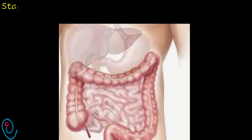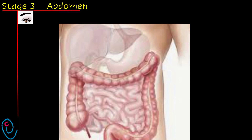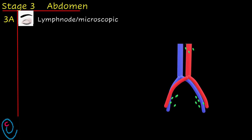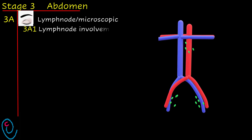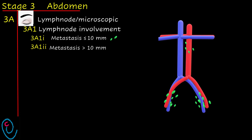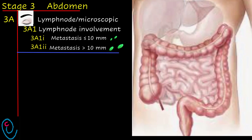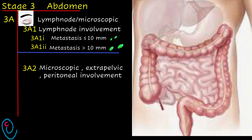In stage 3, there is abdominal spread of the tumor. Further classification of stage 3 depends on what you see. If you don't see the pathology, this is 3a. We don't see lymph nodes because lymph nodes are retroperitoneal. So, lymph node involvement is 3a1, further subclassified into two parts according to the size of the lymph nodes. We also don't see microscopic lesions, so microscopic extra-pelvic peritoneal involvement is 3a2.